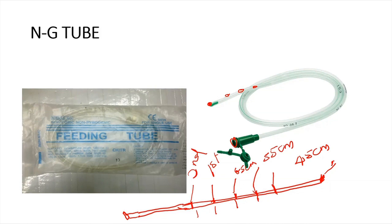Aside from these landmark marks, the tube also has a radiopaque line so that you can use x-ray to actually detect the position of the tube.